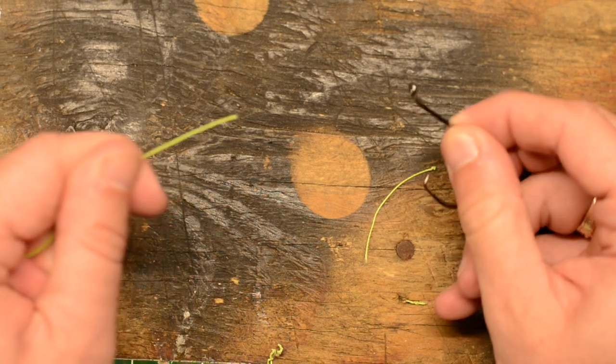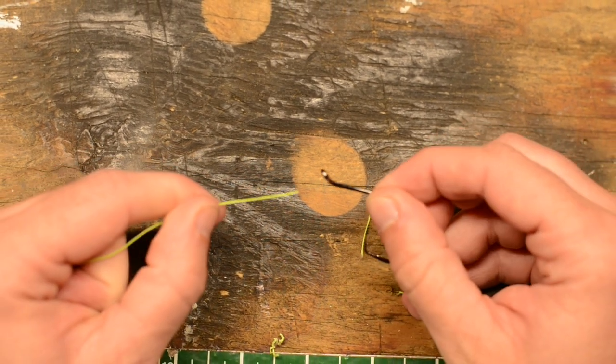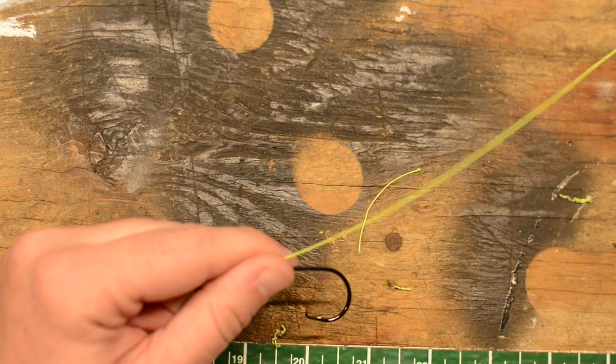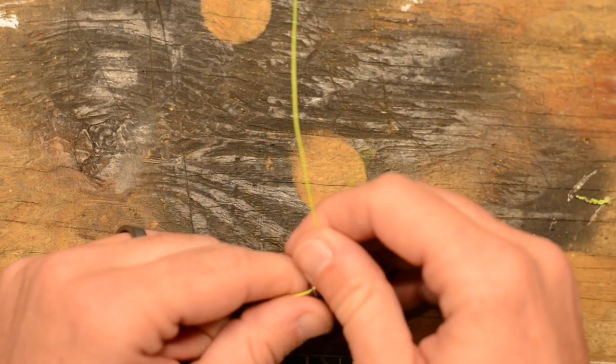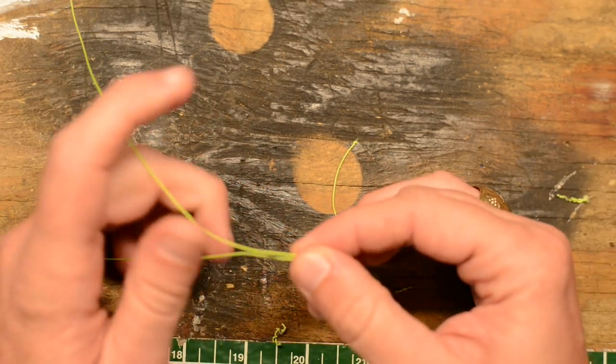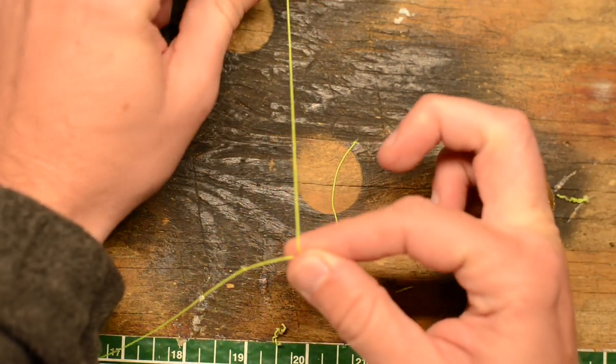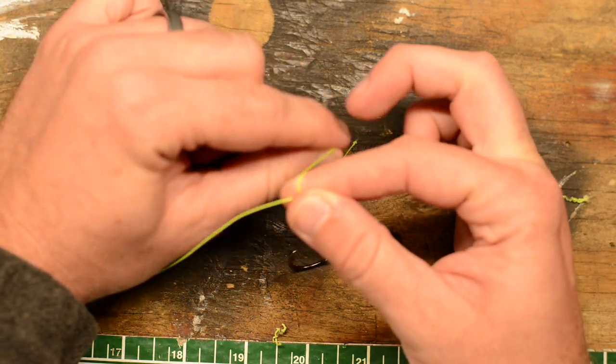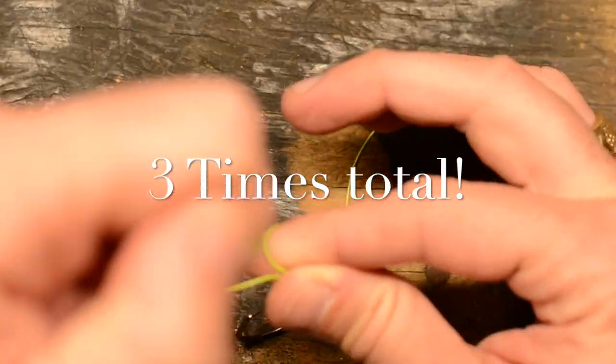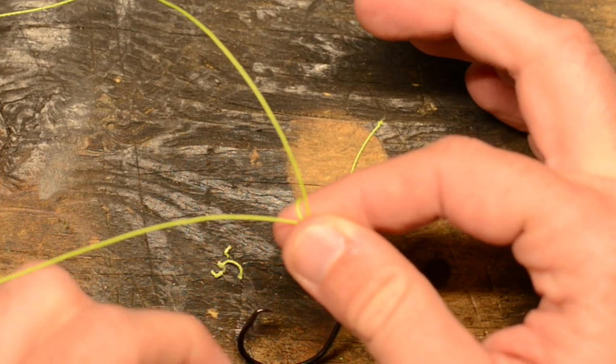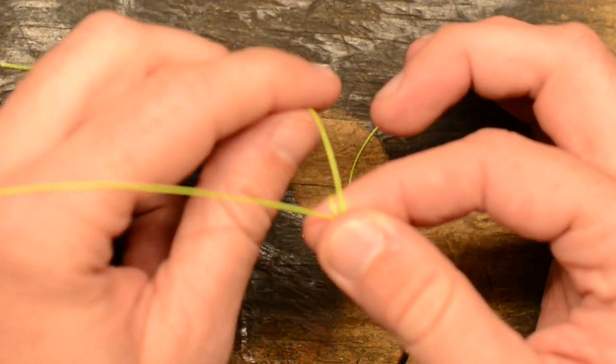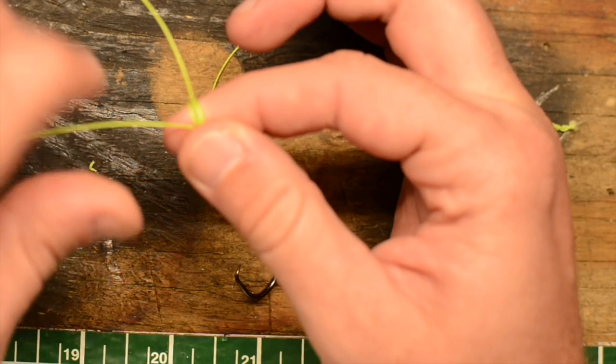So anyways, let's tie this thing. First, what you're going to do is take your line, run it through your eyelet, pull about eight inches off. Then what you're going to do in your right hand is pinch both lines together, and you're going to take your tag end and simply just wrap it around your finger three times. So you go around once, pinch with your thumb, go around one more time, pinch with your thumb, and then the third time, pinch with your thumb.